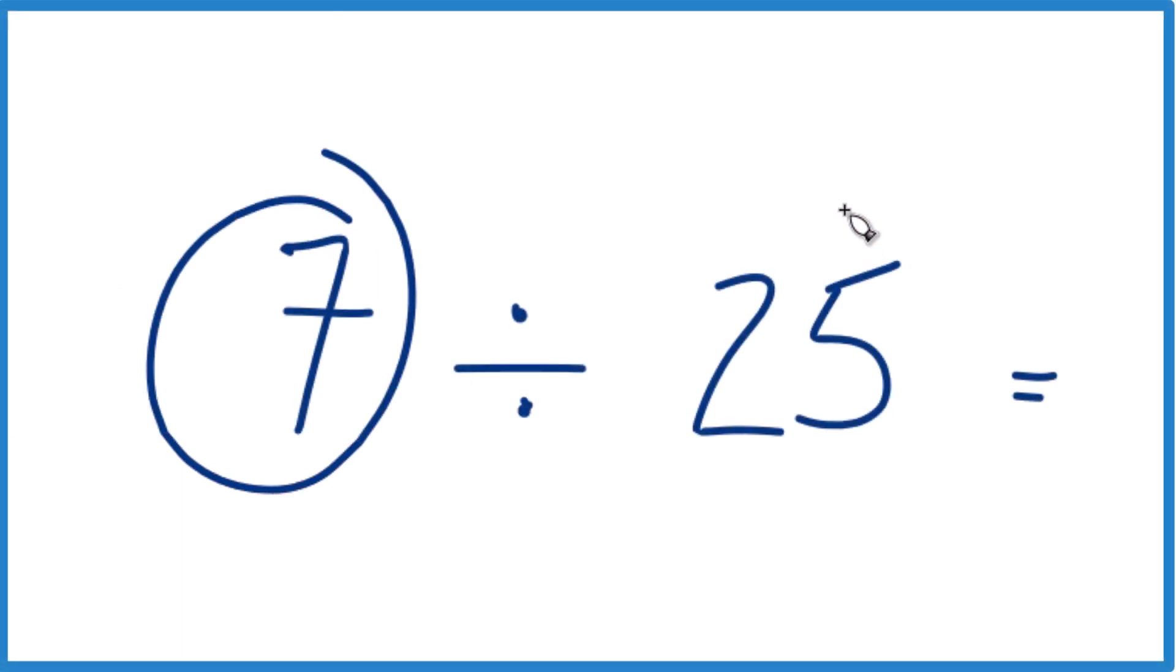Here's how you divide 7 by 25. So the answer is 0.28, but let me show you how I got there.